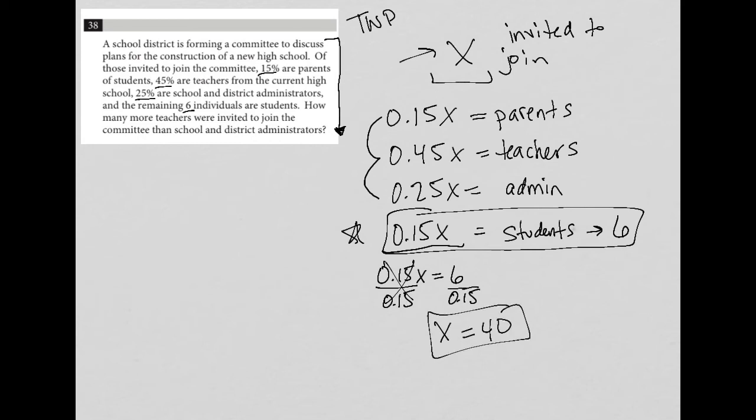Okay, now what's the question actually asking me to find? How many more teachers were invited to join the committee than school and district administrators? Okay, so if X is 40, then that means there were six parents, right? Because this 0.15X and this 0.15X is the same exact percentage. So we have six parents. What's 40 times 0.45 for the teacher number? So 0.45 times 40 is 18. So there were 18 teachers. And for the admin, 0.25 times 40 equals 10. So there's 10 admin.